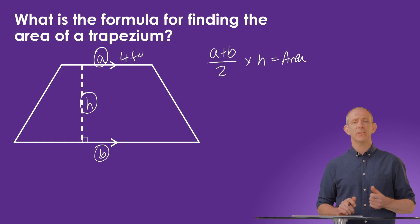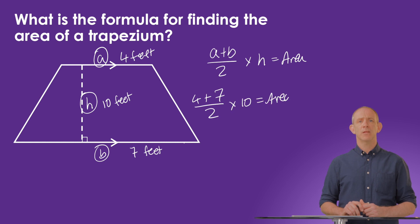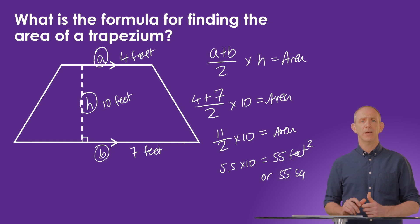So if we say that A was four feet, and B was seven feet, and the height equaled 10 feet, we could calculate it as 7 plus 4, all divided by two, and then times by 10. This would give us an area of 55 feet squared, or 55 square feet. Again, the unit of measurement is squared because we're looking at a space inside the shape, and therefore two dimensions.